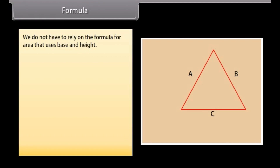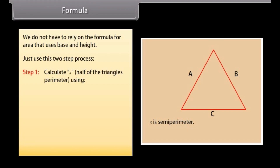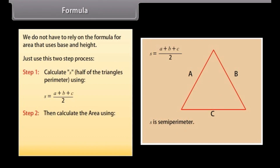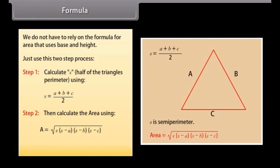We do not have to rely on the formula for area that uses base and height. The formula uses S, which represents the semi-perimeter of the triangle, in a two-step process. Step 1: Calculate S using S = (A + B + C) / 2. Step 2: Calculate the area using A = √(S × (S−A) × (S−B) × (S−C)), where A, B and C are the sides of the triangle.